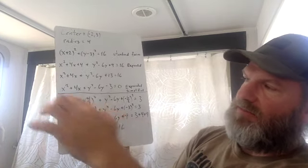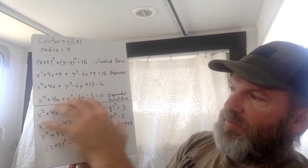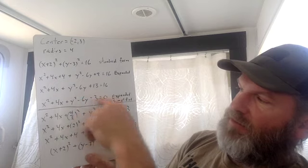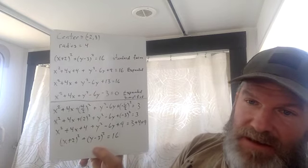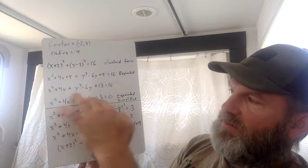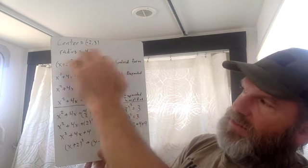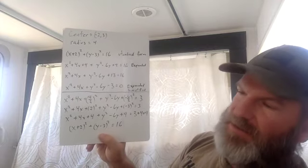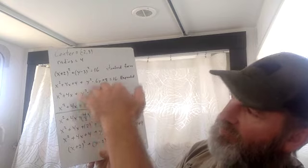I drew a line here on purpose, because now we're going to work backwards. This right here — where we ended in expanded form simplified — is what you're going to see as a problem. You're just going to be given this information and you're going to have to work backwards to get to the standard form. This is where you have to complete the square.